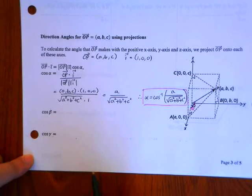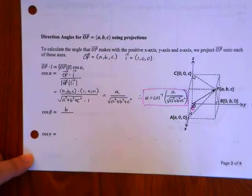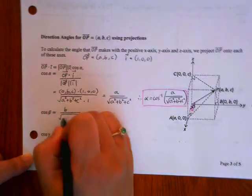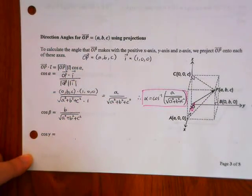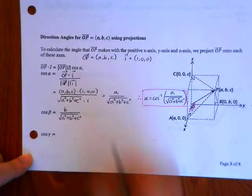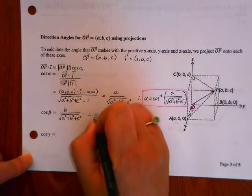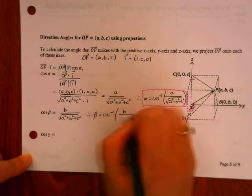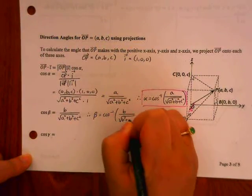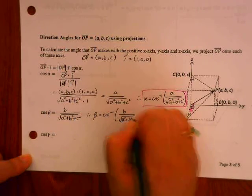Is it A, is it B, is it C? B, yes. Over square root of A squared plus B squared plus C squared. So that means angle beta is equal to cos inverse of B over root - or sorry - A squared plus B squared plus C squared.